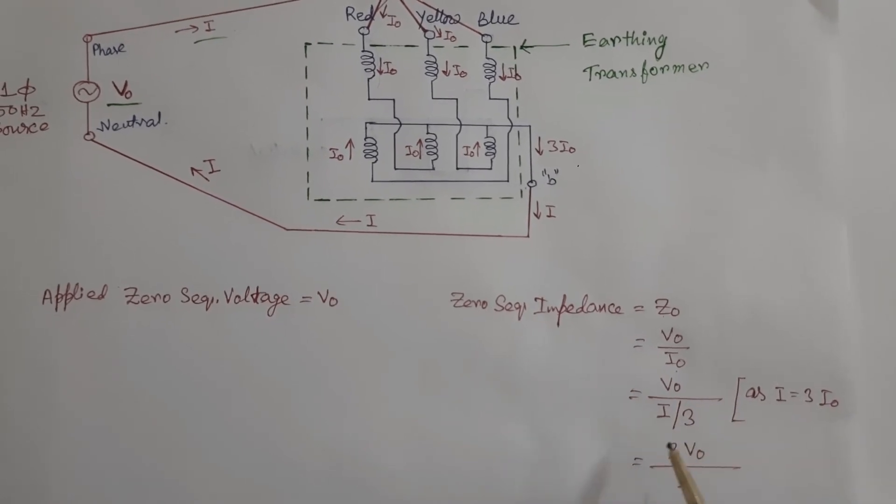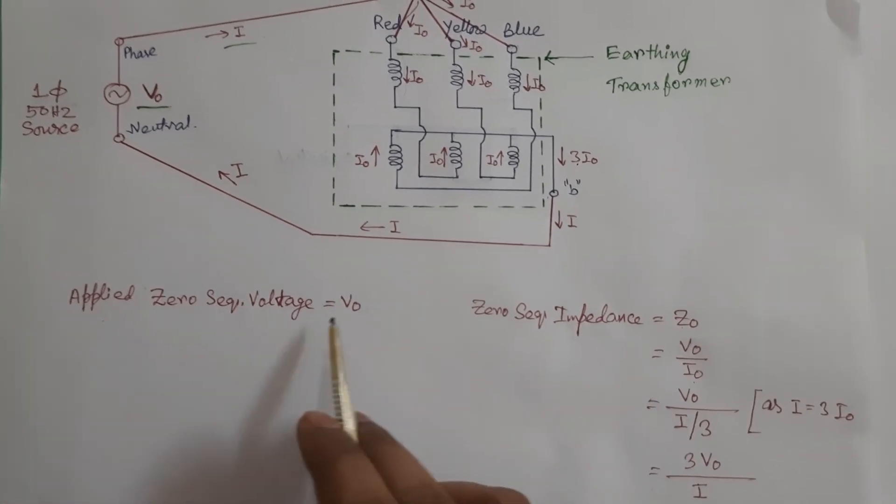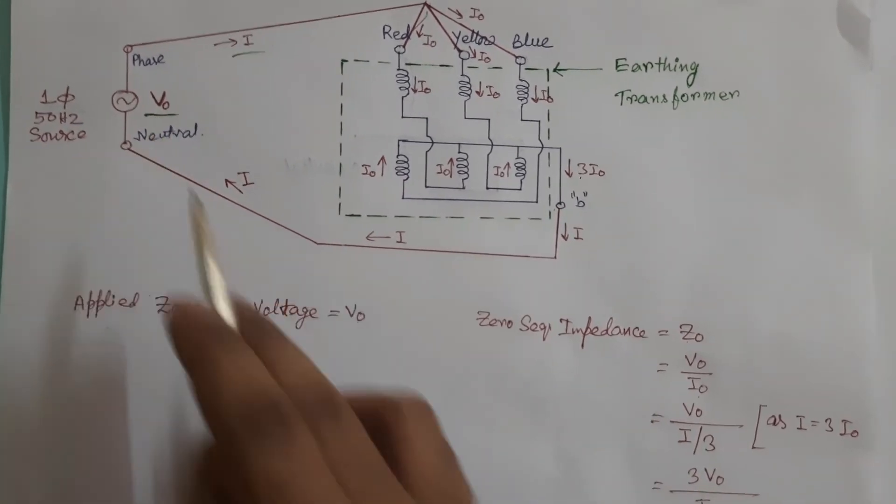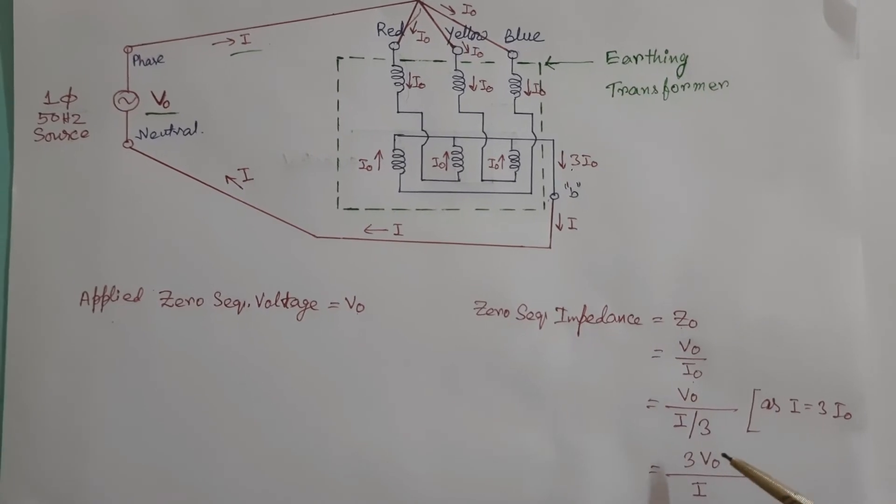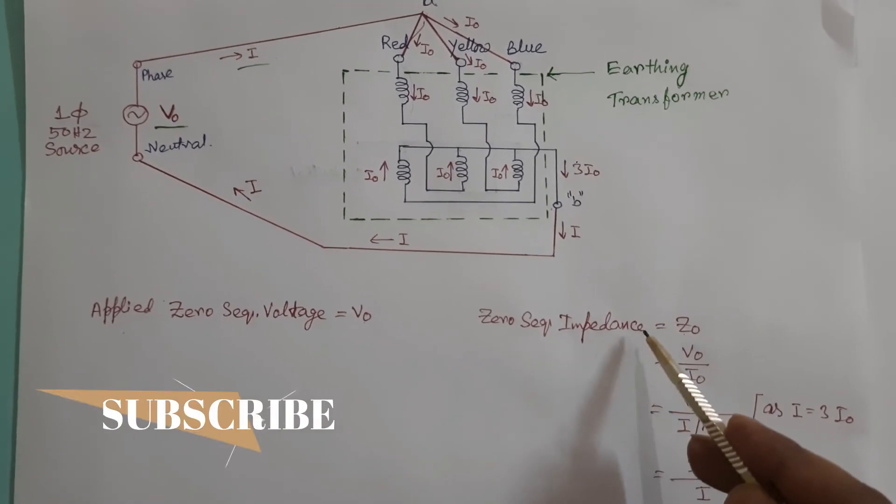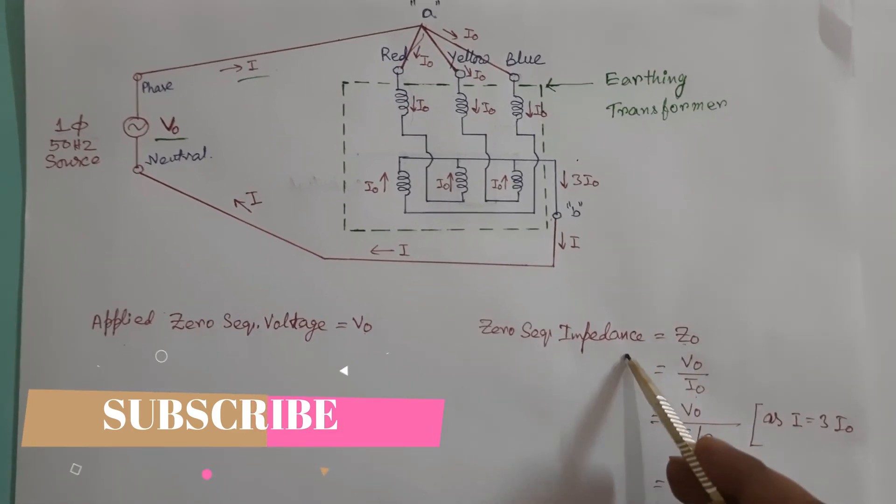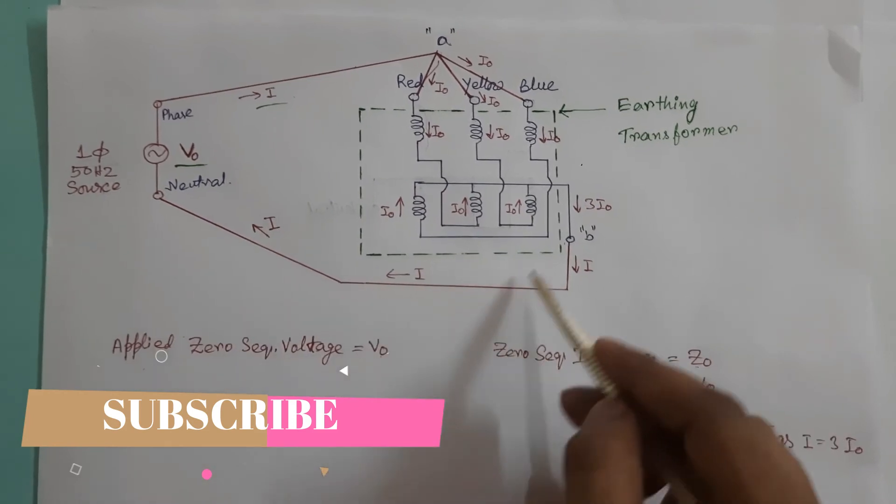We can write this way and applied zero sequence voltage is V zero that we have already measured. By using this equation, we can easily calculate value of Z zero or zero sequence impedance of this earthing transformer.